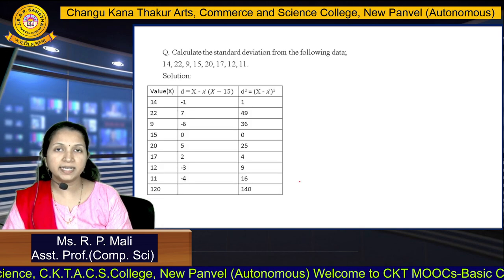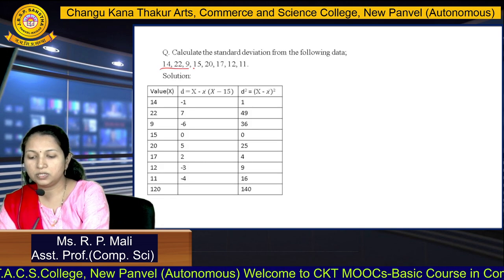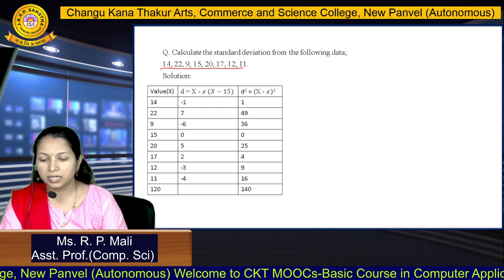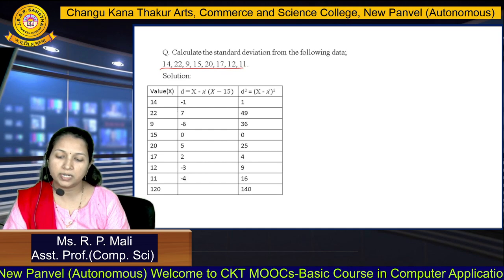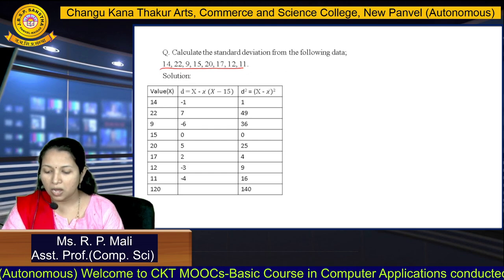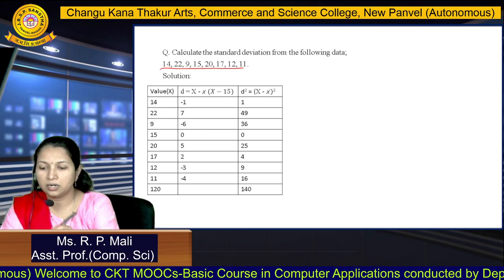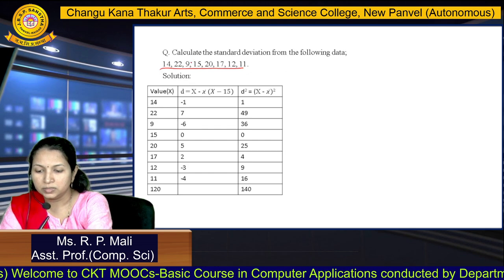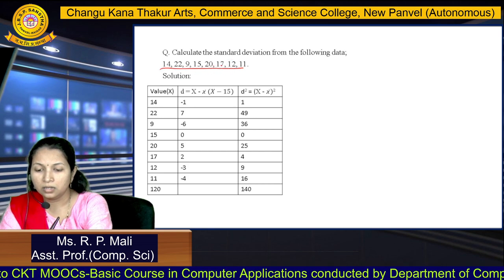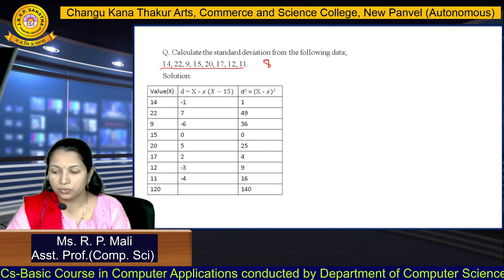We will take one example based on individual data. The values are: 14, 22, 9, 15, 20, 17, 12, 11. There are 8 observations in total.